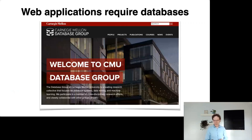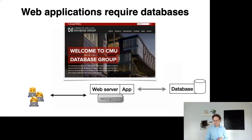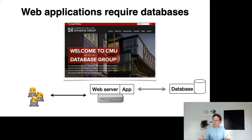What happens when you access a website? When I go to the CMU database group website, my computer talks to a web server running something like Apache or Nginx, then some application code — probably PHP or Python — and that application server talks to a database which actually stores the data making up the contents of the website. This design has been very successful because it separates the concerns of computation and storage.